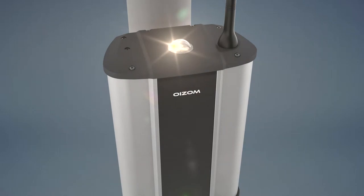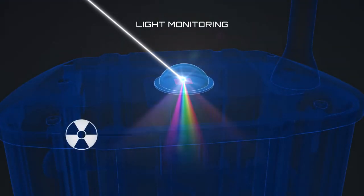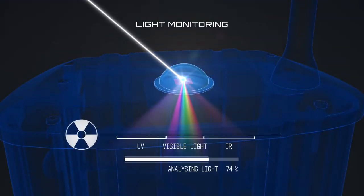As you can observe, the top-mounted pyranometer does solar radiation analysis by diffracting the light rays into UV, IR and visible light spectrums.